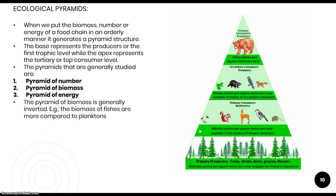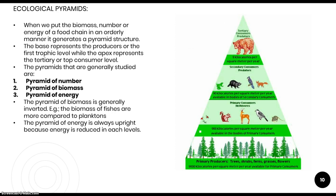The pyramid of biomass is generally inverted. In a sea, there are millions of planktons but the total mass of the fish is much greater than the total mass of those planktons — so at the base, biomass is low and increases upward. The pyramid of energy is always upright because energy at the preceding level is always greater compared to the next level, as seen in the diagram.